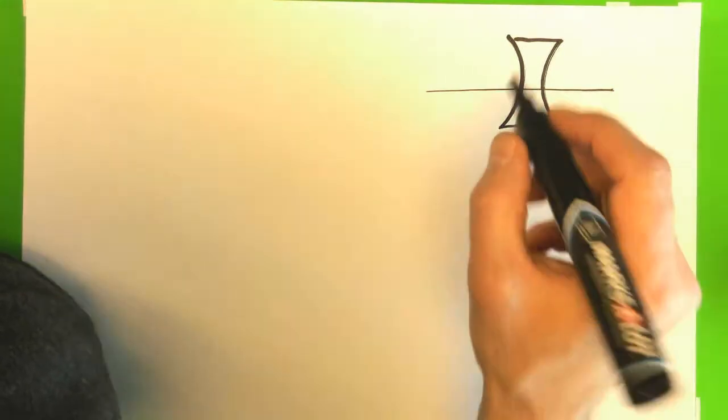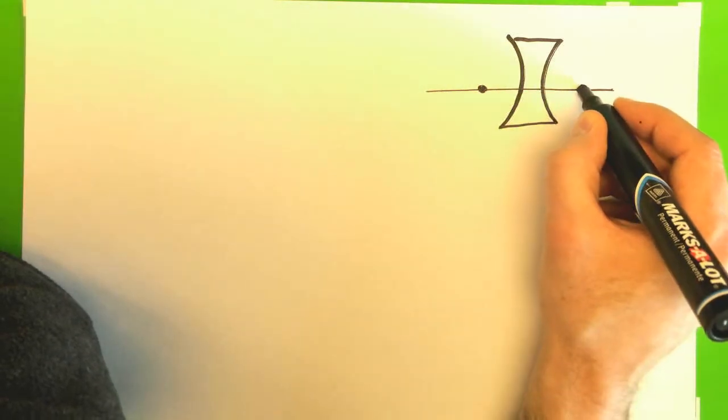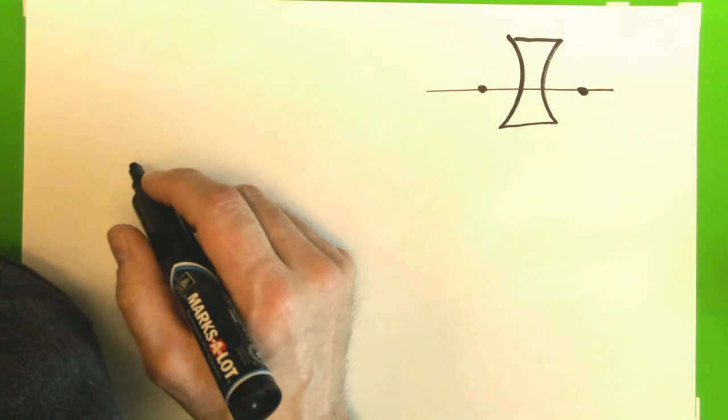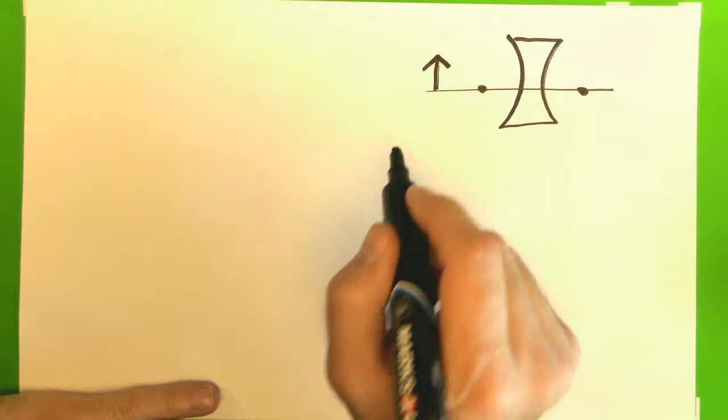So this also has some focal points. Let's draw one here, and let's draw one here. And let's put an object here. What's going to happen to the rays coming off this object?